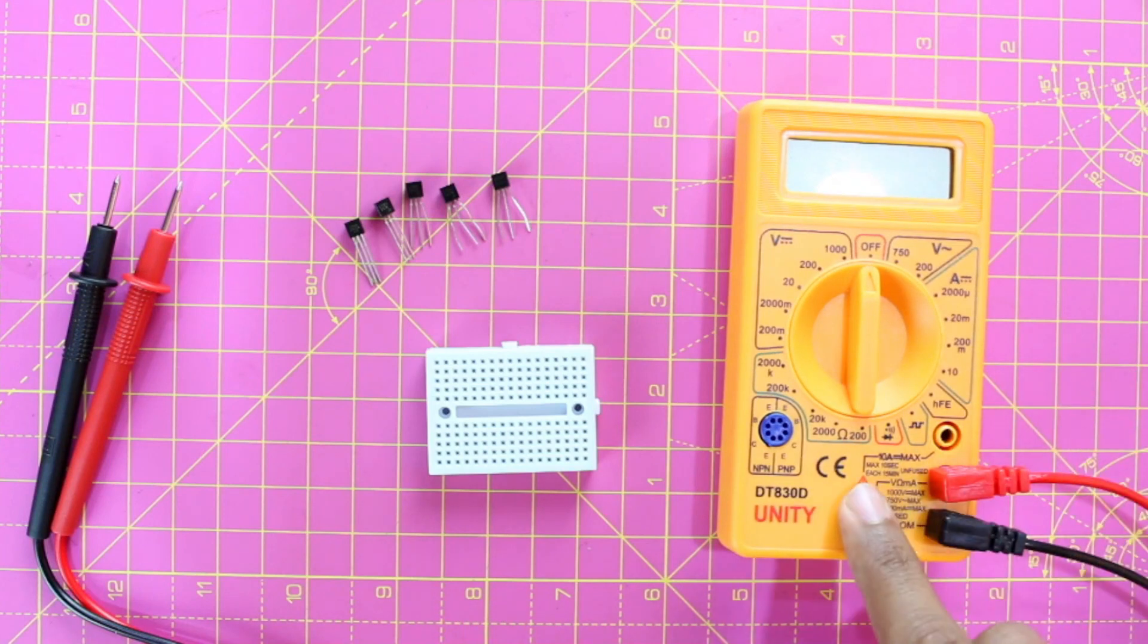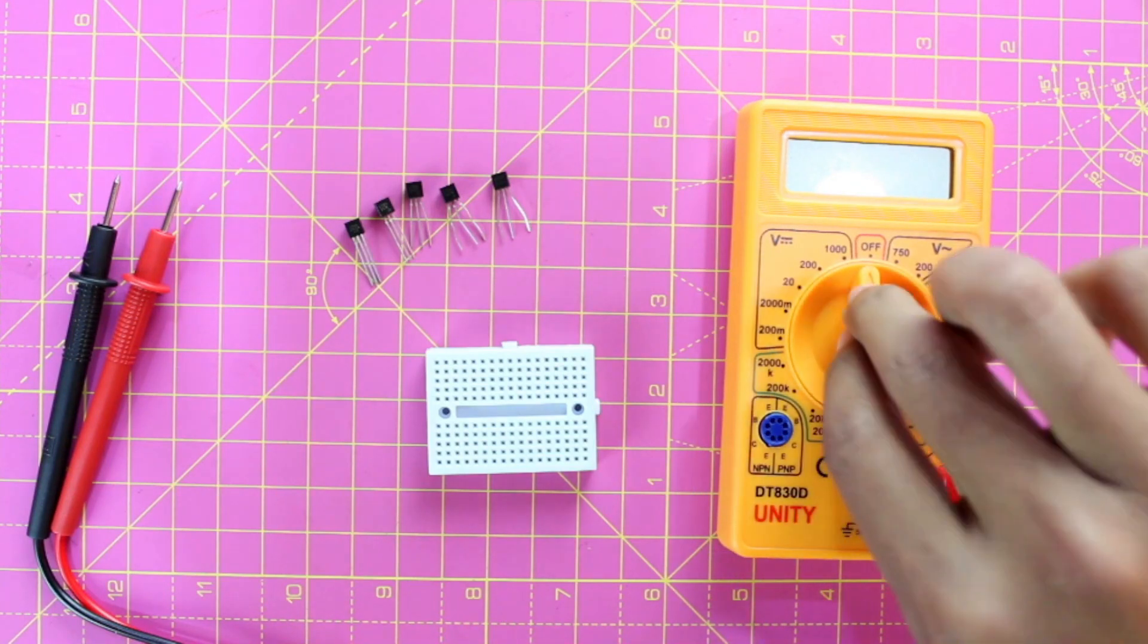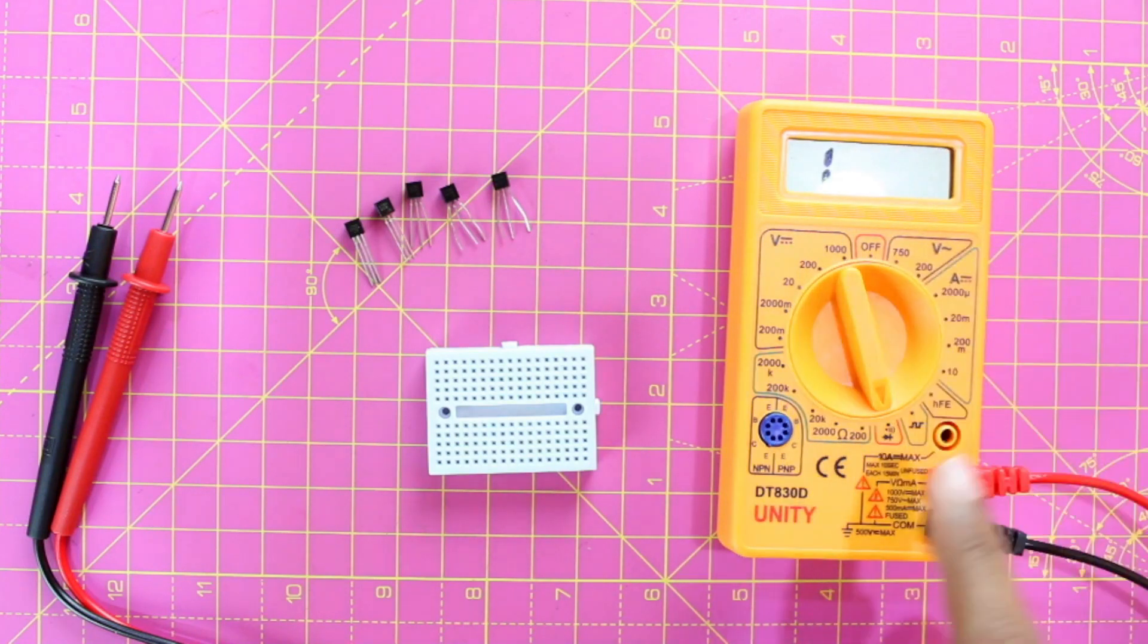Once you've made sure of that, you can put your multimeter into diode mode. You can find the diode symbol here—just turn your multimeter dial to the diode mode.